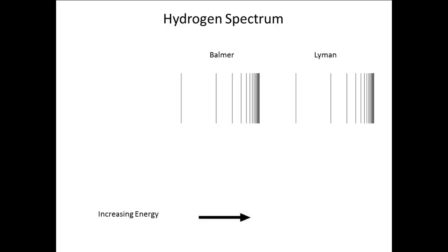And in the infrared region, the region of lower energy than the red region of the visible spectrum, we find a third series, named after the German physicist Friedrich Pachin, who first discovered it in 1908.